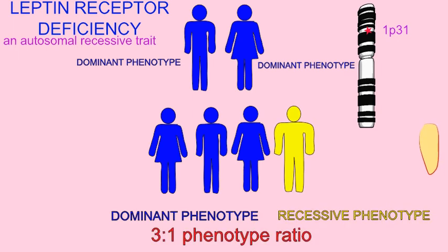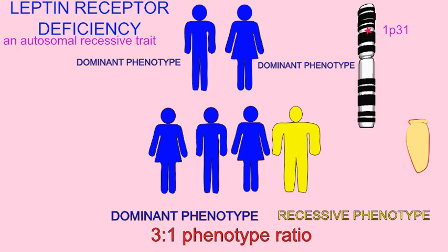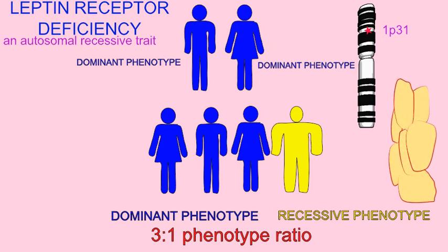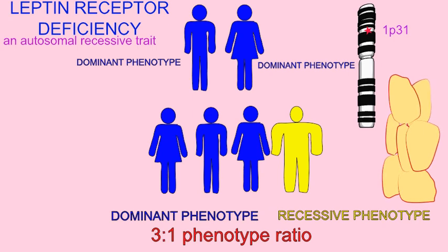A genetic mutation which renders the leptin receptor non-functional therefore has a similar effect as a leptin deficiency in promoting weight gain and overeating, because the body cannot communicate that it has stored adipose tissue. This is an autosomal recessive trait, the gene being located on the short arm of chromosome 1. To be affected, one has to inherit a recessive allele from each parent.